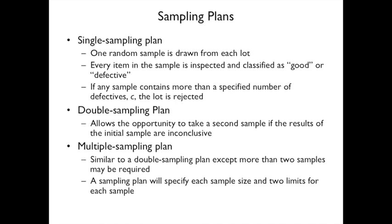There are different sampling plans. A single sampling plan draws one random sample from each lot; every item is classified as good or defective, and the lot is rejected if defectives exceed a specified number C. Double sampling allows a second sample if the first is inconclusive. Multiple sampling is similar to double sampling, but more than two samples may be required. A sampling plan specifies sample size and acceptance limits for each sample.